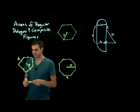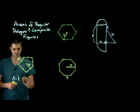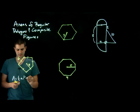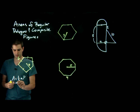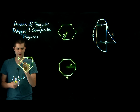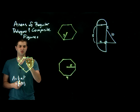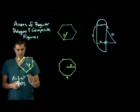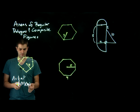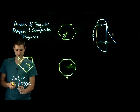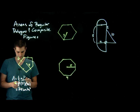So we want to find the area. The equation is area equals one half AP, where A is the apothem and P is the perimeter of the regular polygon. The apothem here is 5, and the perimeter is going to be 6 times 5, which is 30. Half of 30 is 15, and 15 times 5 is 75 units squared.